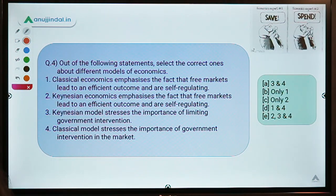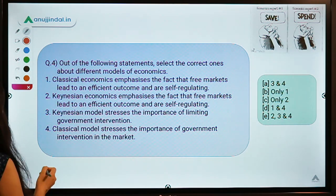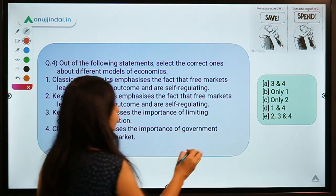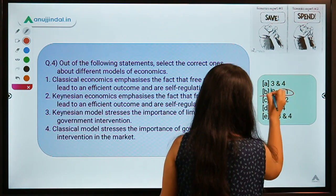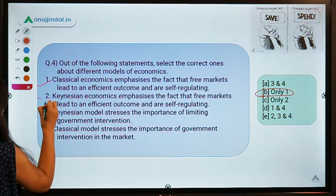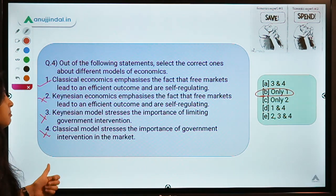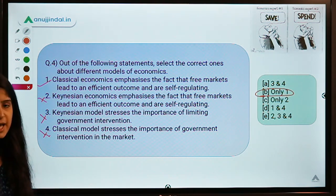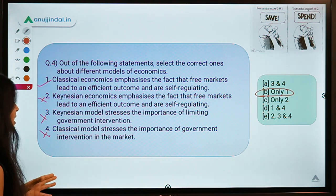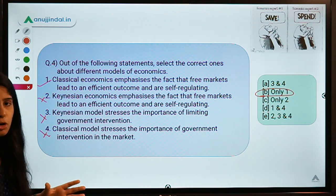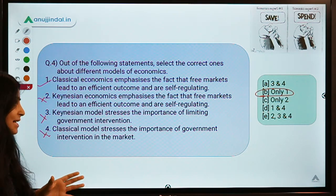Question four talks about economic models. You have to select the correct statement from four given options. The correct option is B — only one statement is correct, the rest are not. One of you had requested in the comments to discuss classical and Keynesian models of economics. Classical is an older model whereas Keynesian is a later model that came after the classical ones.